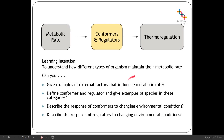From this lesson you should be able to give examples of external abiotic factors that influence metabolic rate, and state that conformers are more influenced by their external environment — their internal environment fluctuates along with the external environment — whereas regulators use metabolic means to regulate their internal environment. The response of conformers is that their body systems fluctuate with changing environmental conditions, with possible behavioural adaptations to help maintain internal conditions. The response of regulators can be both physiological and behavioural. We're going to look at thermoregulation in more detail in the next lesson.